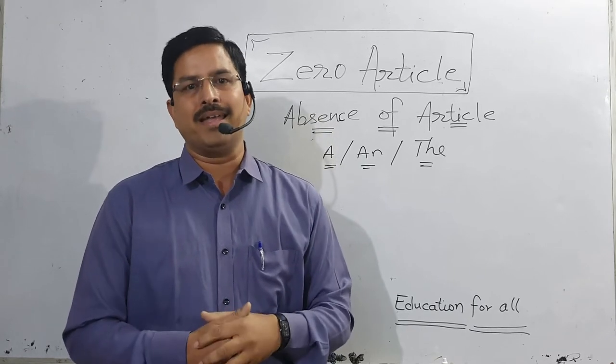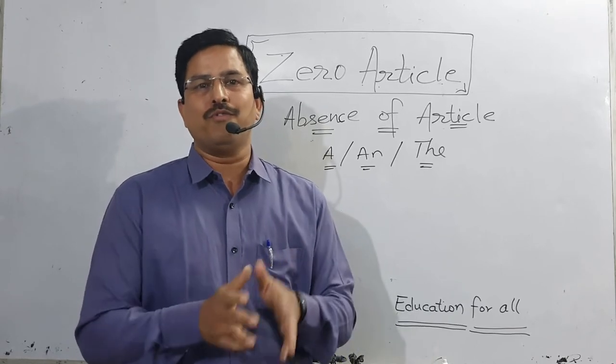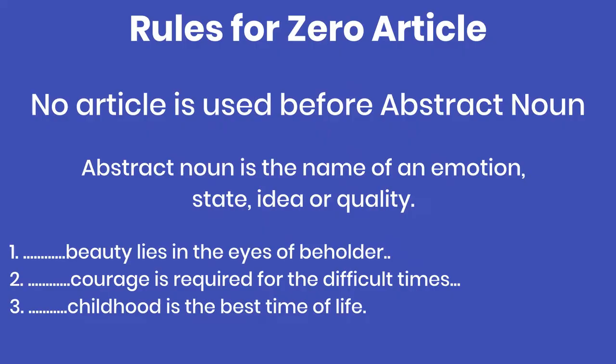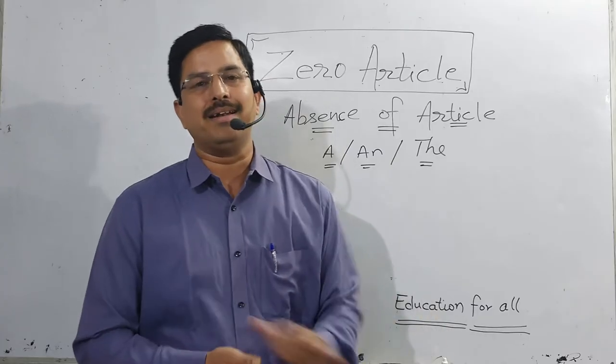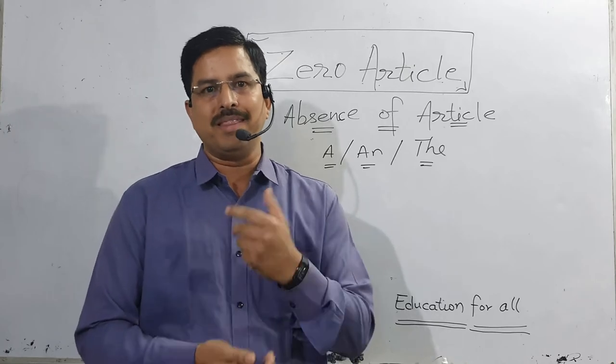The next rule is: no article is used before an abstract noun. Abstract noun is 'bhavachak sangya' — the name of any emotion, idea, or state. That is abstract noun. No kind of article is used before abstract nouns. As you can see in the slide with the sentences in front of you.